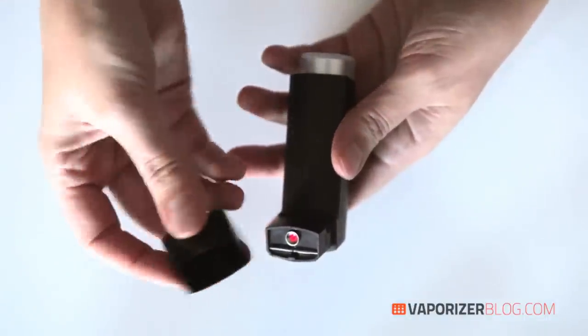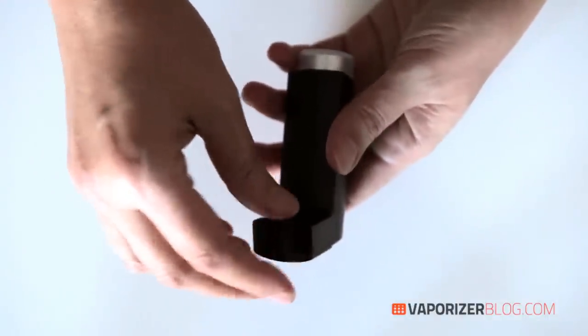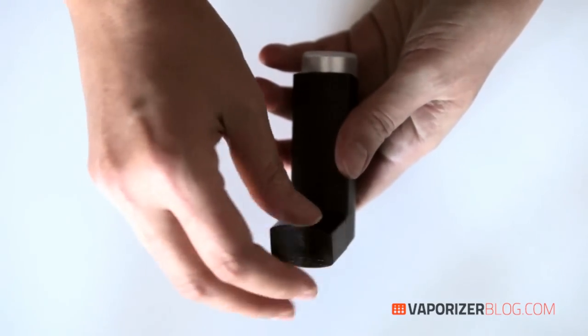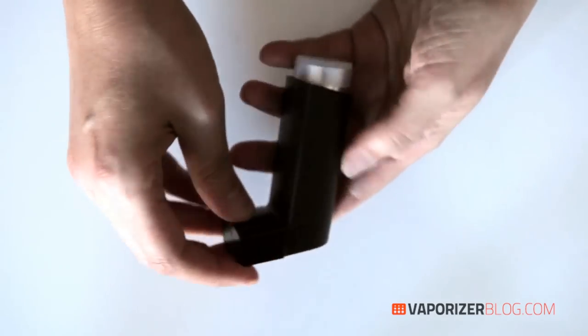To turn the unit off all you have to do is put this little black cap on it again like this and that turns it off and it has this magnet in it that automatically turns it off so that's easy enough to do.